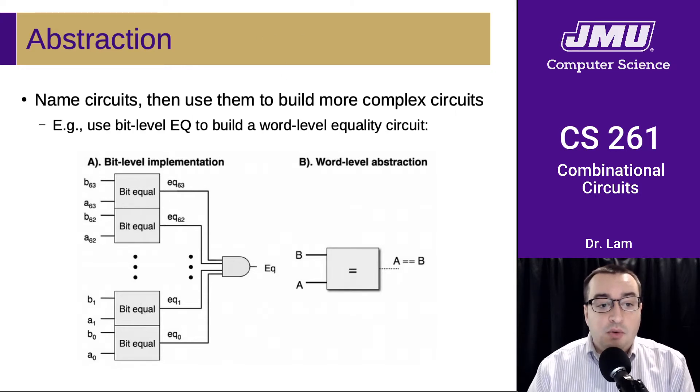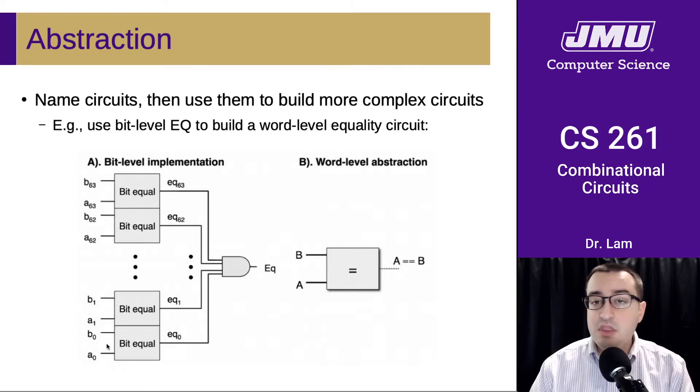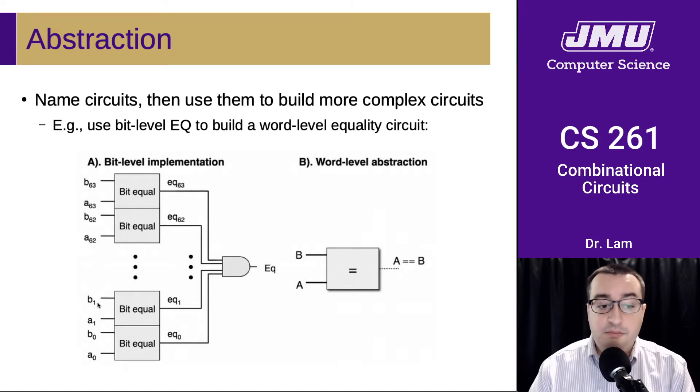So what we'll do here is we will take 64 copies of that bit equality circuit. Take everything that was inside of that box, duplicate it so that we have 64 copies, line them all up, and make all their A inputs labeled with a number corresponding to which circuit it is. Same thing with the B inputs. Make sure that all the B and A inputs correspond to each other. So this is the first bit of A, first bit of B. Second bit of A, second bit of B. And what we're going to get are 64 outputs, and each of those outputs is telling us whether the corresponding input bits were the same.